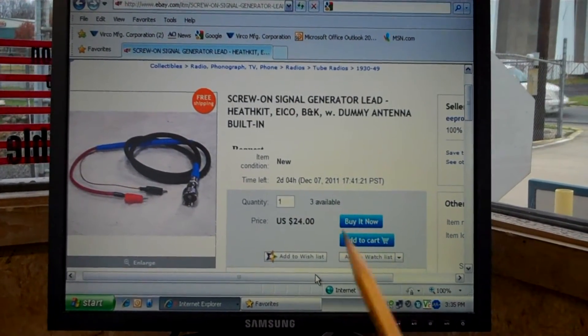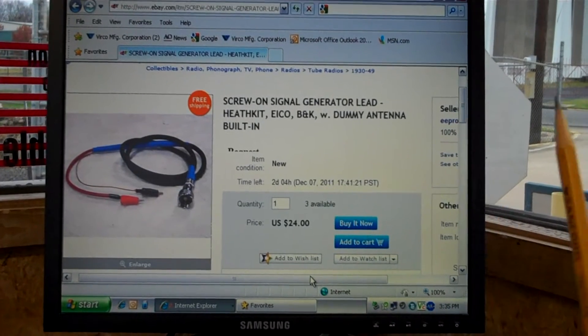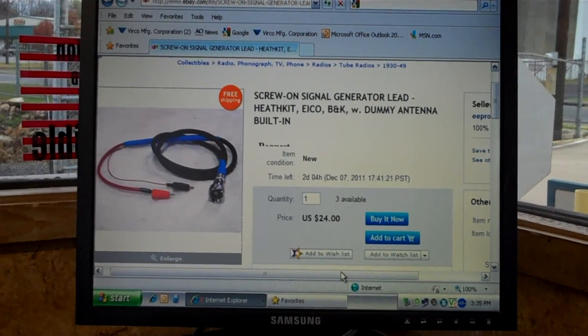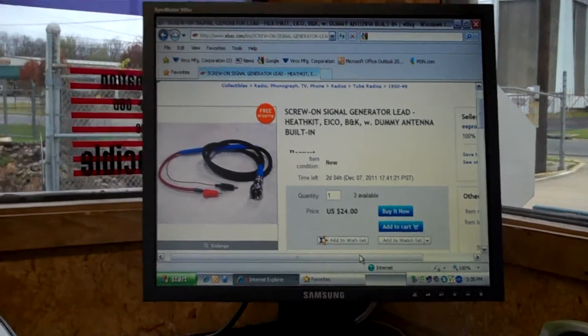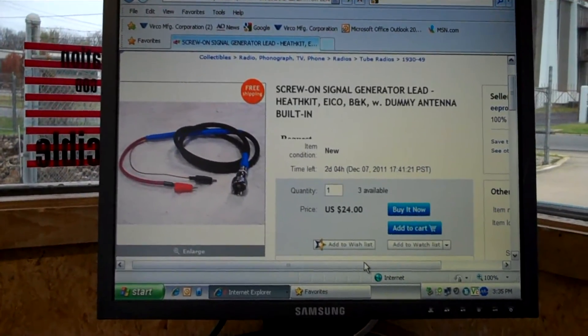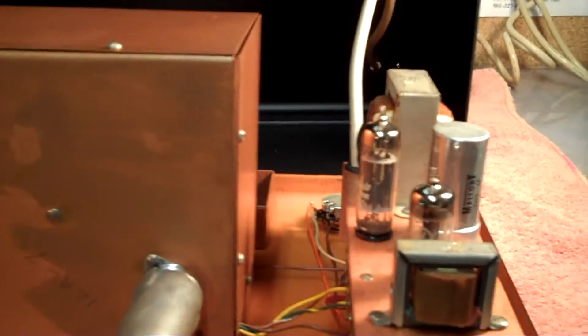Screw-on signal generator lead, Heathkit, ICO, B&K, with a dummy antenna built in. So I don't even have to stick a capacitor on the radios and things that I'm sending a signal into, because that takes care of it all.